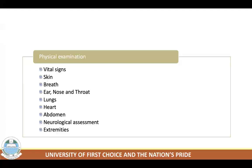Hepatomegaly may suggest liver congestion. All patients require careful neurological assessment, with major concerns being concomitant head trauma and spinal cord injury in comatose patients. The extremities should be evaluated for thrombophlebitis, fracture, dislocation, or vascular insufficiency. Rhabdomyolysis and compartment syndrome are definite concerns in overdose patients, especially those with prolonged coma or underlying trauma.